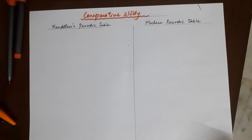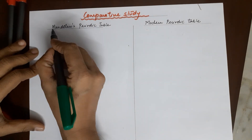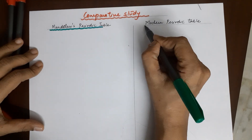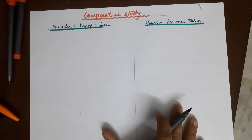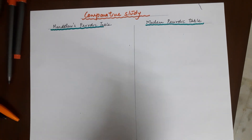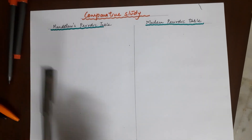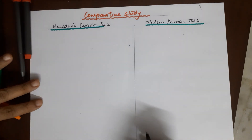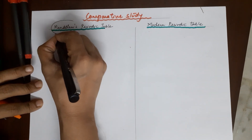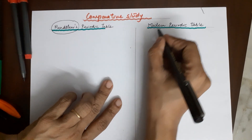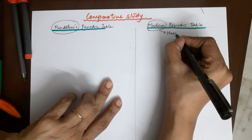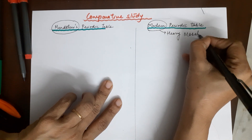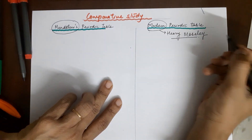Hello kids, you're watching the channel by Sima Makijani. For a comparative study of Mendeleev's periodic table and the modern periodic table, I'll be comparing the two tables for your convenience. When we talk about Mendeleev's periodic table, it was given by Mendeleev, while the modern periodic table was proposed by Henry Moseley.